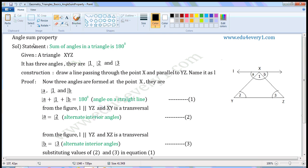Angle Sum Property Statement: Sum of Angles in a Triangle is 180 Degrees. We have to prove that the angles in a triangle are equal to 180 degrees.